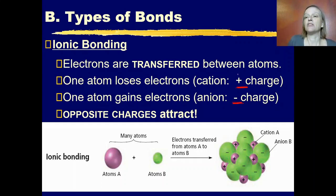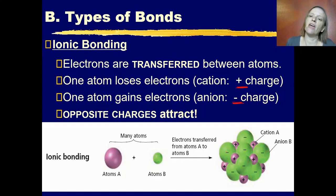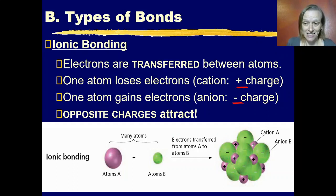The other atom gains electrons, so it has a negative charge and is an anion. These opposite charges attract each other. You have many millions of each type of atom, and they gather together in a conglomerate that we call an ionic lattice.